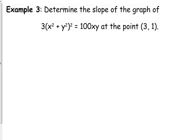Determine the slope of the graph of this implicitly defined function: 3 times (x² + y²)² equals 100xy at the point (3, 1). A couple of keys: slope of the graph always makes you think derivative. Slope of the graph should always make you think derivative, first of all.